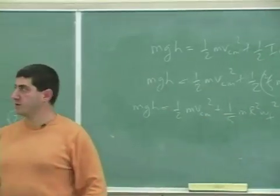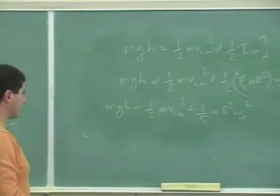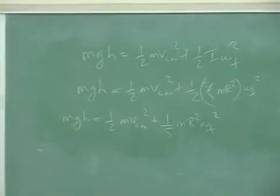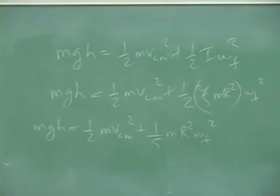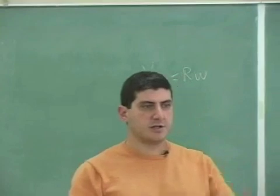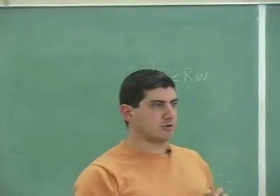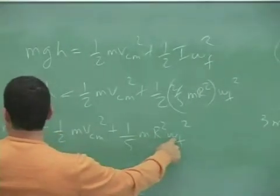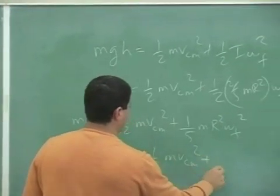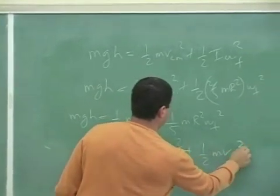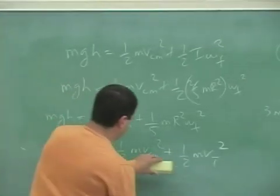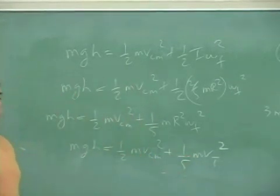So we have one-half MV squared plus one-fifths MR squared omega final squared. Then we use rotational kinematics: V tangential equals R times omega. So the V tangential at the surface of the rotating object equals R times omega, and we can substitute V tangential squared in, giving us one-half MV center of mass squared plus one-fifths MV tangential squared.